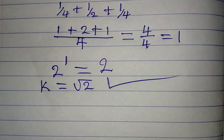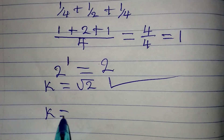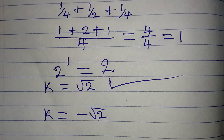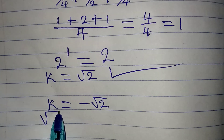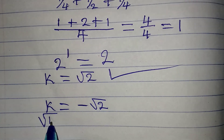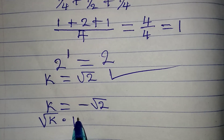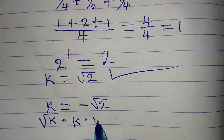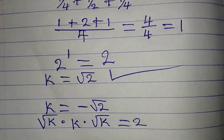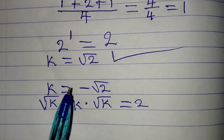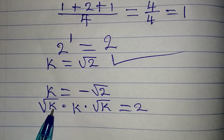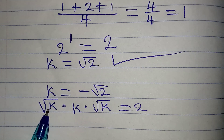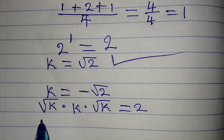But if you pick the negative value — k equal to negative square root of 2 — will this satisfy the given equation? Remember the original equation is square root of k times k times square root of k equals 2. If we put k equal to negative square root of 2 into this, we will have to find the square root of a negative number.